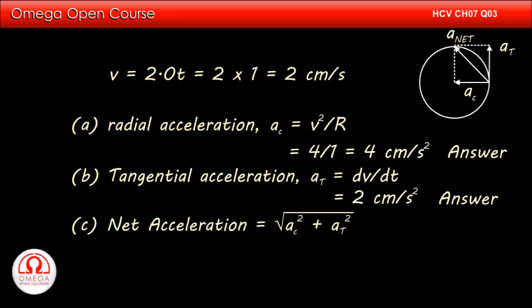Thus magnitude of net acceleration is square root of radial acceleration squared plus tangential acceleration squared, that is square root of 16 plus 4, or root 20 cm per second squared. This is the answer to part c of the question.